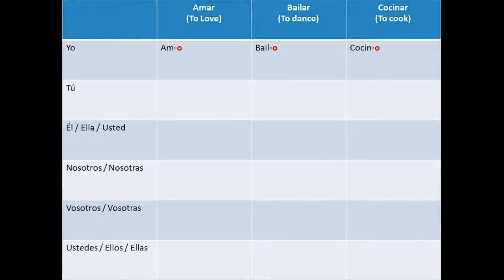Yo: amo, bailo, cocino. As you see, the stem for these verbs are AM for amar, BAIL for bailar, and COCIN for cocinar.